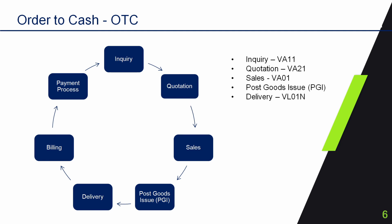Then billing begins. At the billing stage, we send the bill to the customer for the goods delivered. We have accounting entries at this stage where we debit the customer and credit the cash account. The transaction code for billing in SAP is VF01. The final step is the payment process. In this process, we receive money against the sale, make account entries, and close the deal. The transaction code is FB50.